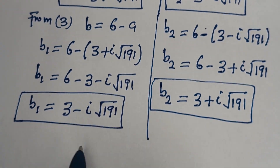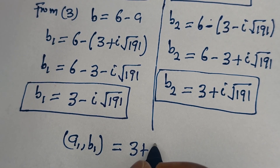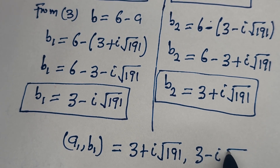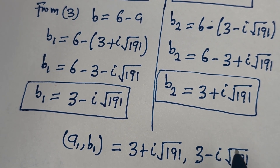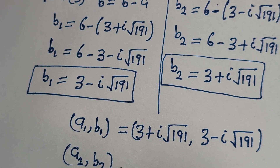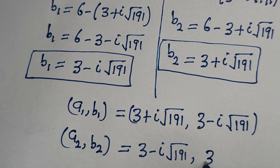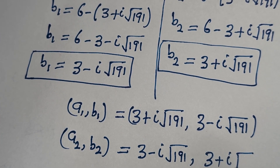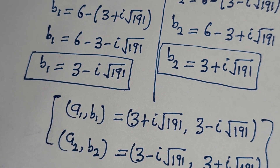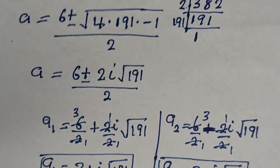Therefore our final answers are: A1, B1 equals (3 plus i square root of 191, 3 minus i square root of 191), and A2, B2 equals (3 minus i square root of 191, 3 plus i square root of 191). These are the final answers. I hope you enjoyed the video. Thank you for watching — please don't forget to like, share, comment, and subscribe to my channel. Bye.